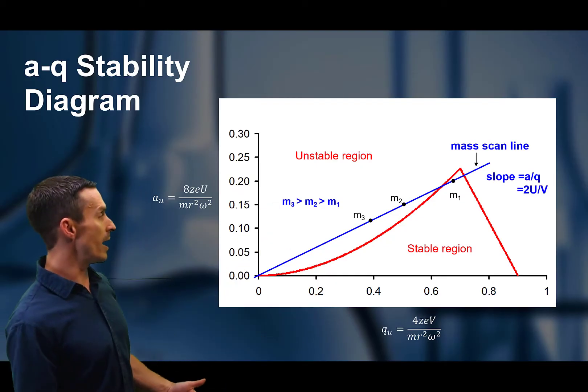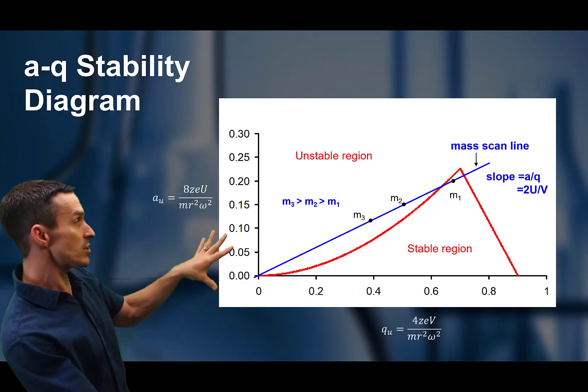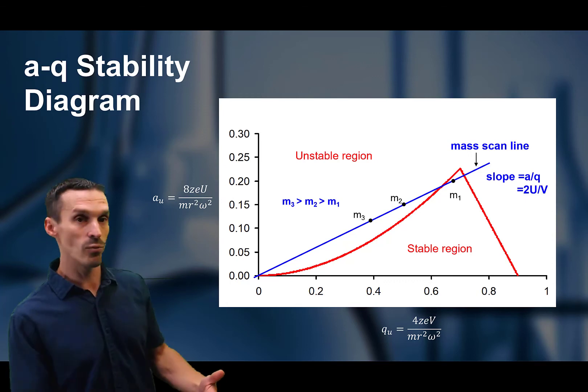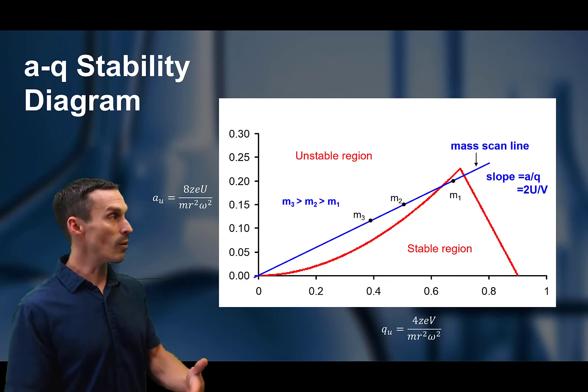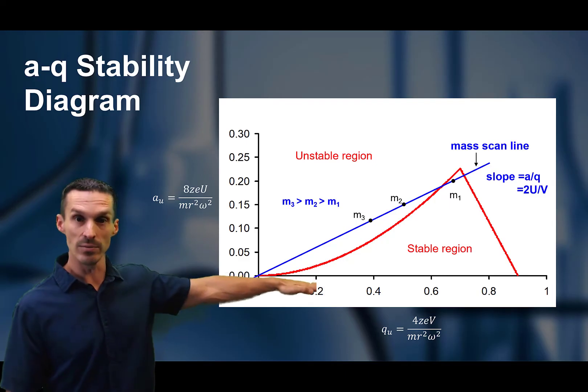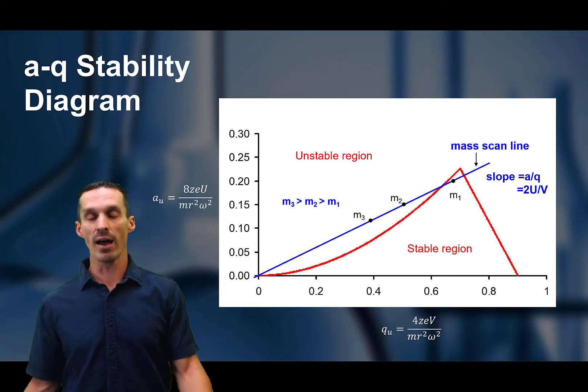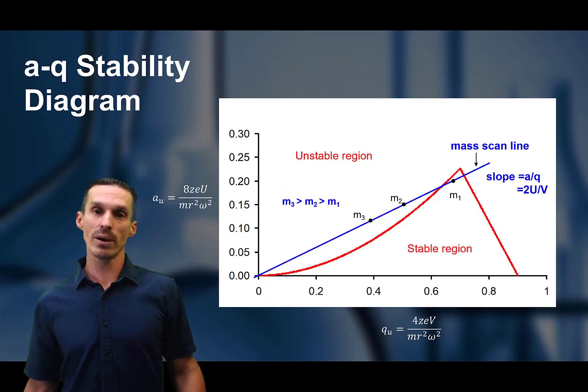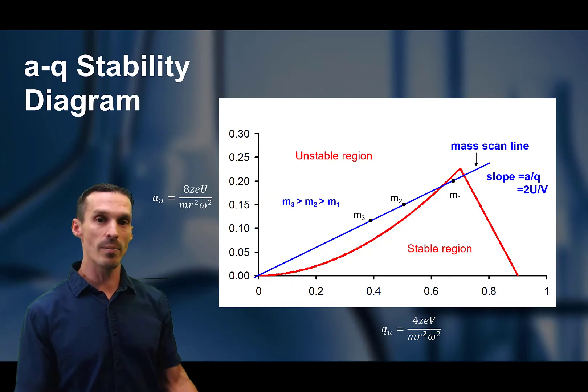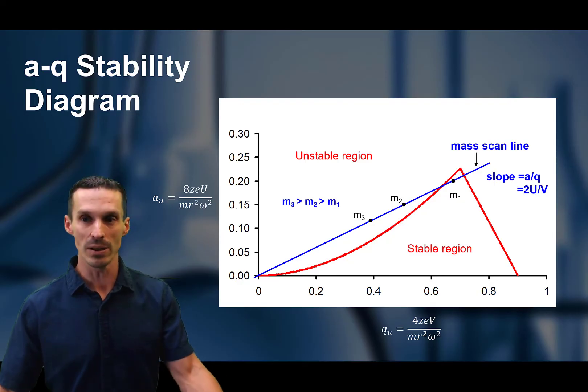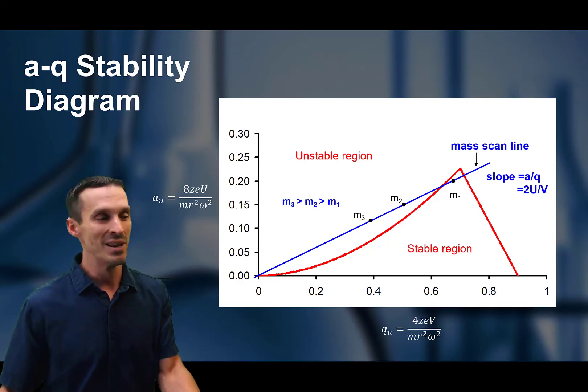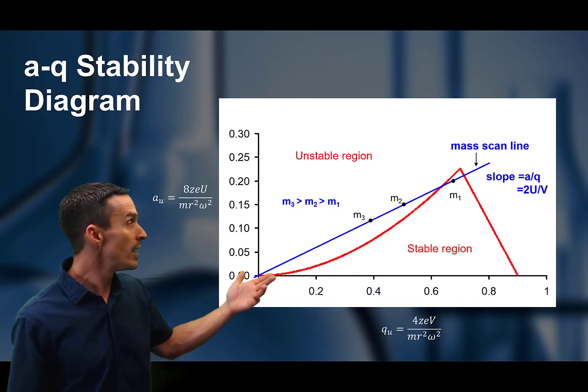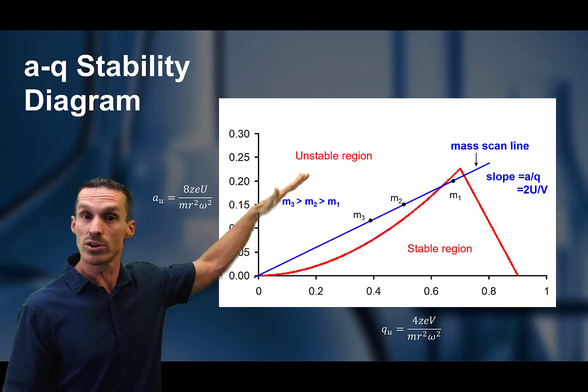So any ion with its given m over z will land somewhere inside of this plot, and that depends exactly on how you decide what voltage to set. So what is the magnitude of U and of V? So we pick that, and when we pick that, what we do is we fix it just onto that line. So that blue line is what we call a mass scan line. Those are the parameters that we define when we turn on the instrument. Now by the way, when you operate a mass spec, the instrument's doing this for you. So you're not having to type these numbers in, but this is what it's actually doing—it's placing all of the ions on this virtual line.